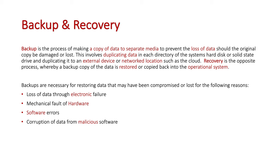Software errors can come in the form of malicious software, or software that got corrupt and crashed, causing you to lose access to files. There is also operator or user-generated error, where an individual has accidentally done something wrong on the system — accidentally deleted a file or caused a whole directory to crash — and we need to get that data back.